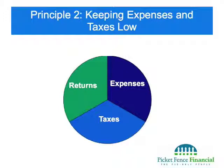Taxes again — we can't control what Congress does, but we can control when we take taxes. So if you have losses, you take the losses to offset future gains, or if you have gains in a year, you try to balance them when you have losses.